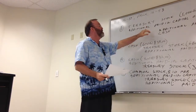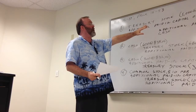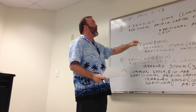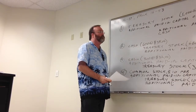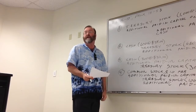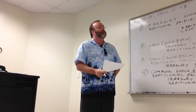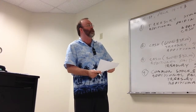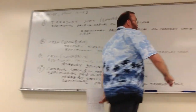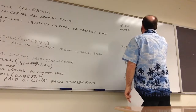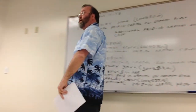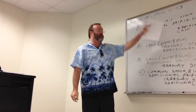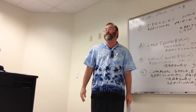Under the par value method, we take out all additional paid-in capital in its entirety for the full 1,000 shares upfront, then record additional paid-in capital from treasury stock for the $2 net gain on the transaction. This simplifies transactions two, three, and four considerably.